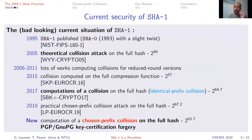Last year we proposed an attack at roughly 2 to the 67. In this work we managed to improve this to 2 to the 63.7 computations. We actually computed such a collision and provided an application by applying it to PGP.